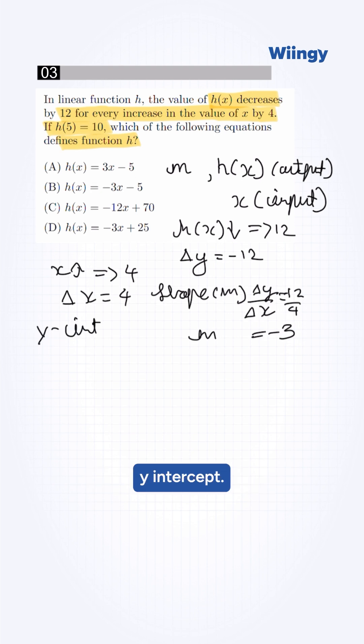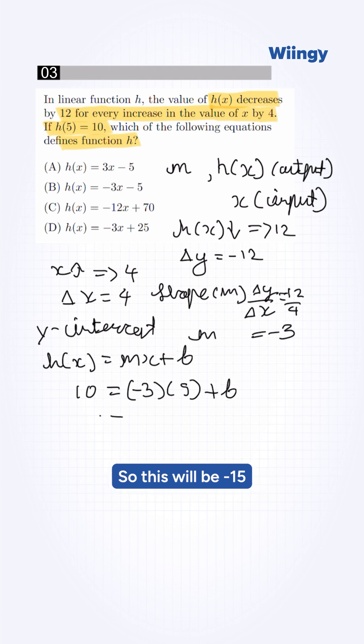We need to find the y-intercept. The formula is y = mx + b. If we put the values into this equation, h(x) = 10, so 10 = -3(5) + b. This gives us -15 + b = 10, so b = 25.